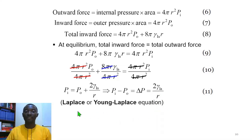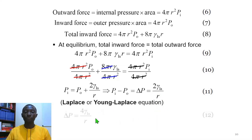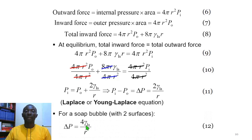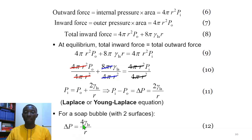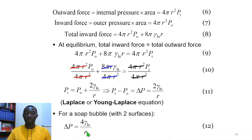Rearranging this expression gives ΔP = P_i − P_0 = 2γ_LA / R, which is equation 11 — the Young-Laplace equation. For a soap bubble with two surfaces, the Young-Laplace equation becomes ΔP = 4γ_LA / R, which is equation 12.